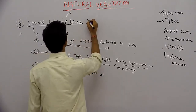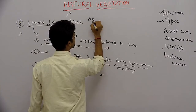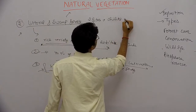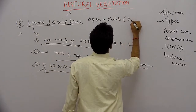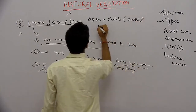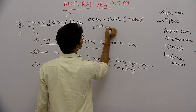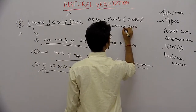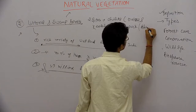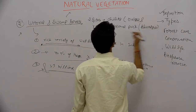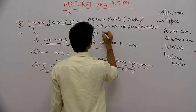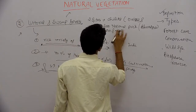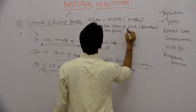Under this category, two notable sites are Chilka Lake and Keoladeo National Park, located at Bharatpur. These are protected as waterfowl habitats.